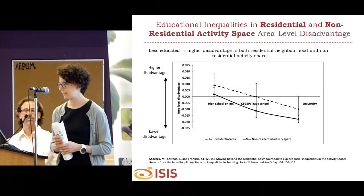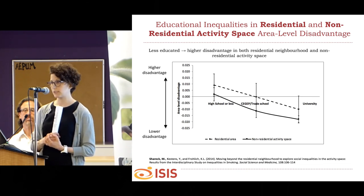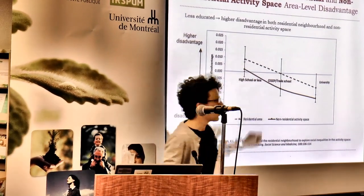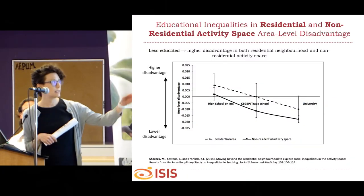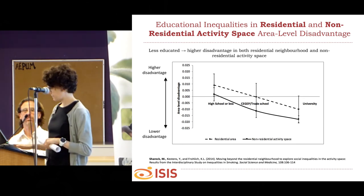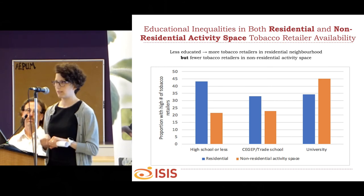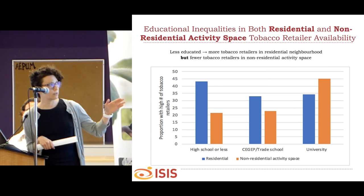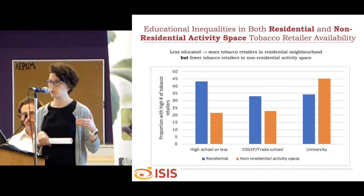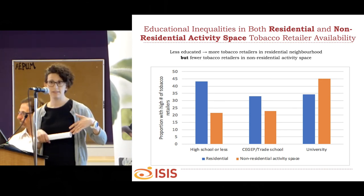Ce qui est intéressant, c'est qu'il y a des inégalités sociales chez les jeunes adultes dans l'exposition à la défavorisation, autant dans leur quartier de résidence que dans l'espace d'activité. On voit que les jeunes moins éduqués non seulement vivent, mais aussi passent du temps dans des endroits plus défavorisés que les jeunes ayant un niveau d'éducation moyen ou élevé. Quand j'ai fait l'exercice avec l'exposition aux commerces vendant des produits du tabac, on a observé un gradient similaire pour le quartier de résidence seulement — les jeunes moins éduqués étant exposés à un plus grand nombre de commerces. Par contre, dans l'espace d'activité, c'est un gradient inverse qu'on observait : les participants les plus éduqués étaient exposés à des environnements où il y avait un plus grand accès potentiel à des commerces vendant des produits du tabac.